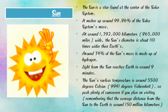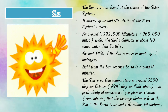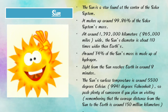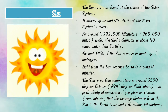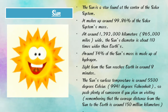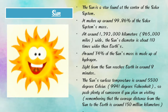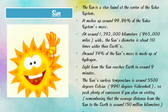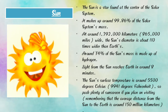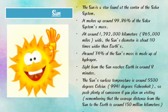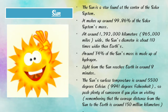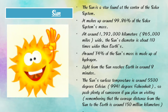It makes up around 99.86% of the solar system's mass. Around 74% of the sun's mass is made up of hydrogen. Light from the sun reaches Earth in around 8 minutes, and the sun's surface temperature is around 5500 degrees Celsius. The average distance from the sun to Earth is around 150 million kilometers.